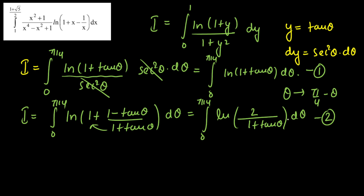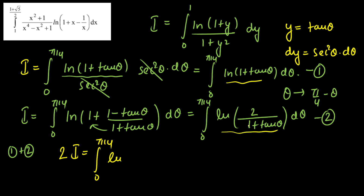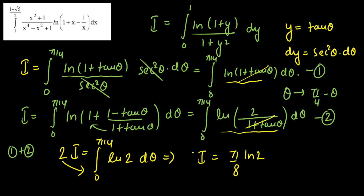Whenever we apply King's property, we add the two equations. Adding equation 1 and equation 2: I + I = 2I = ∫₀^(π/4) [ln(1 + tan θ) + ln(2/(1 + tan θ))] dθ. Using ln A + ln B = ln(AB), the (1 + tan θ) terms cancel and we get 2I = ∫₀^(π/4) ln 2 dθ = ln 2 · π/4. Therefore I = π/8 · ln 2. This is our final answer.